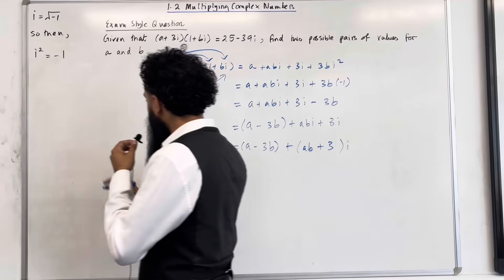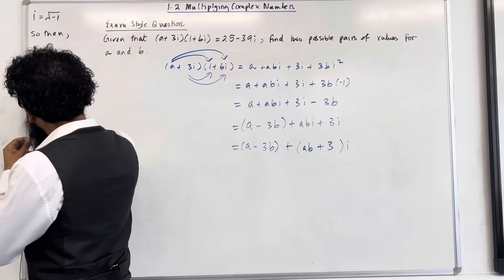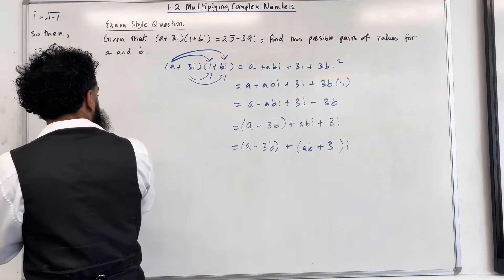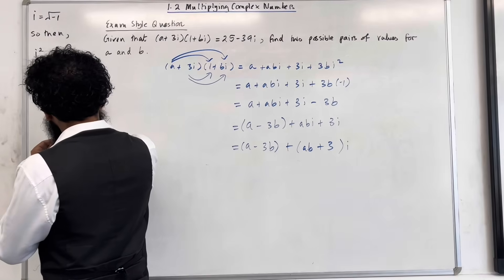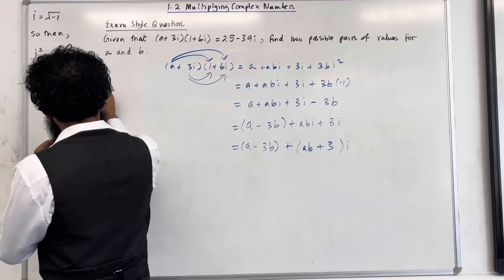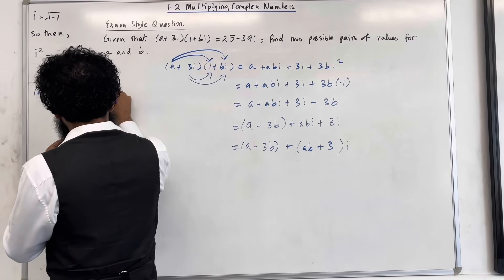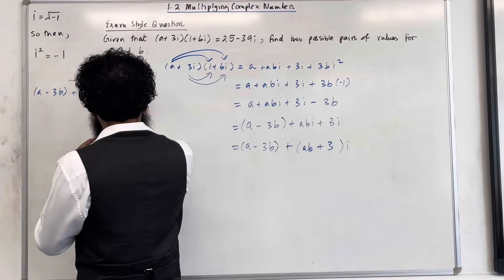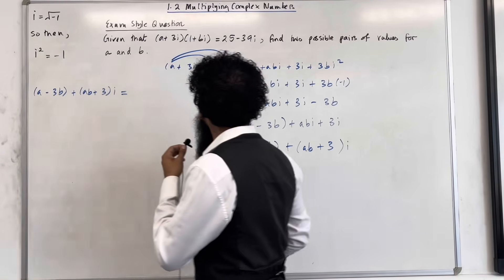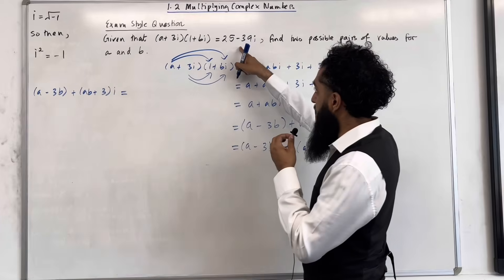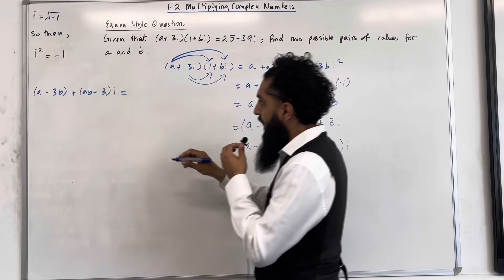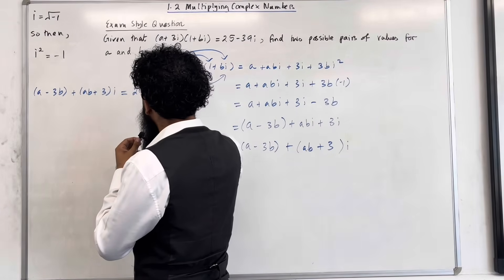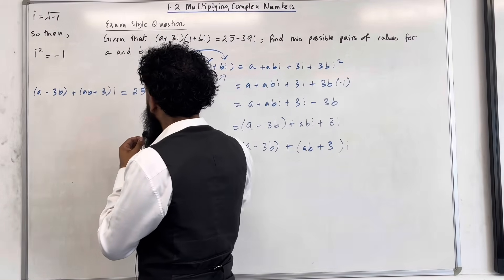So we must have that (a minus 3b) plus (ab + 3)i has to equal to the right-hand side: 25 minus 39i.